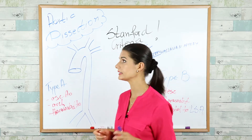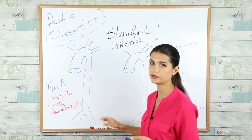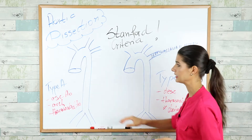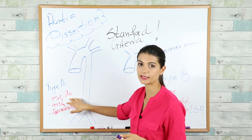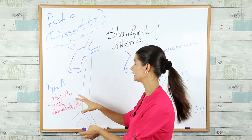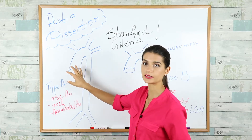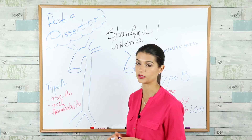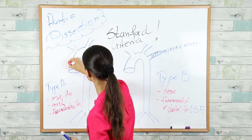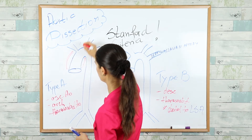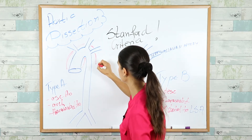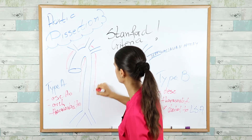We use the Stanford criteria to differentiate two types of aortic dissection: Type A and Type B. In Type A, the ascending aorta is involved, or the arc of the aorta, or the thoracoabdominal aorta. This dissection can go all the way to the thoracoabdominal aorta, involving the ascending portion, the arc, or extending further.